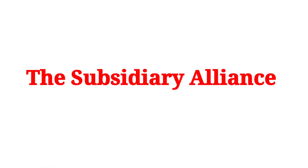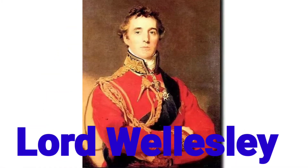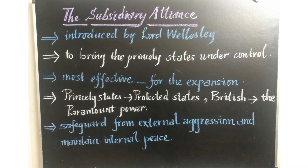This class, we are going to learn about two important policies introduced by the British in India. One is the Subsidiary Alliance. Alliance means making unity with the British people. That was introduced by Lord Wellesley. The main motto behind this was the annexation of Indian territories with the British. Subsidy means paying something — like if you hire a car, you pay a hire charge. So the British decided to get some subsidy from Indian rulers in exchange for giving protection to them.